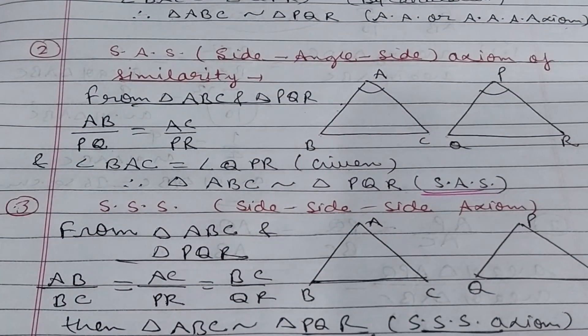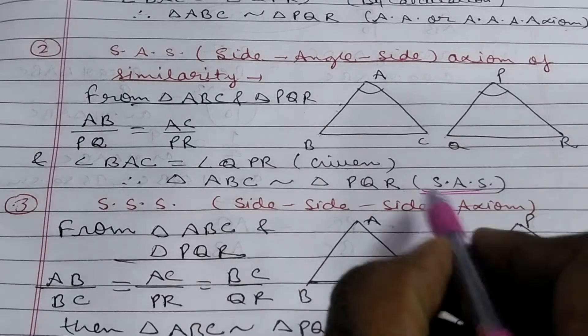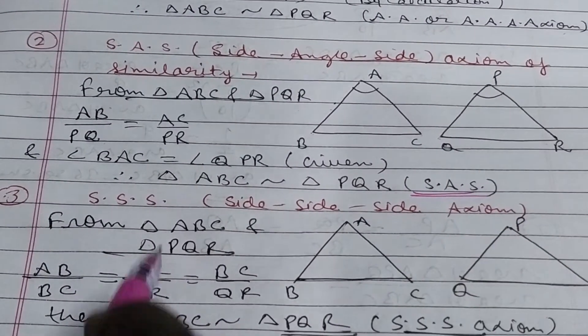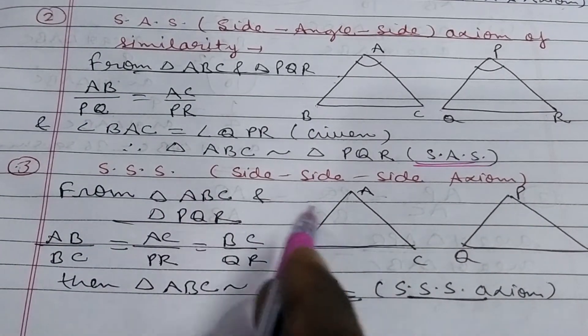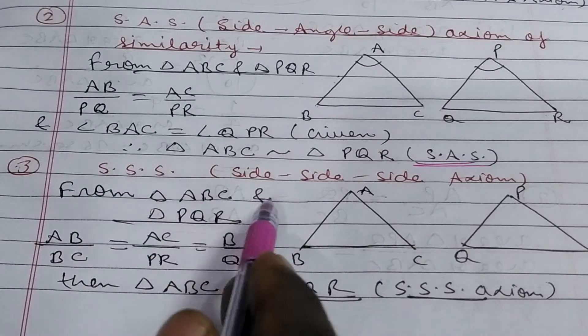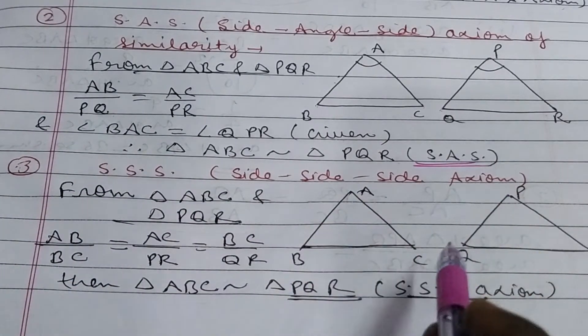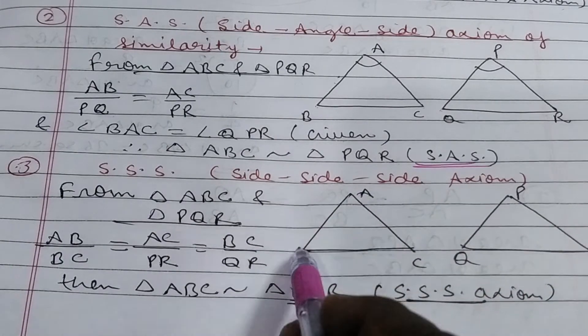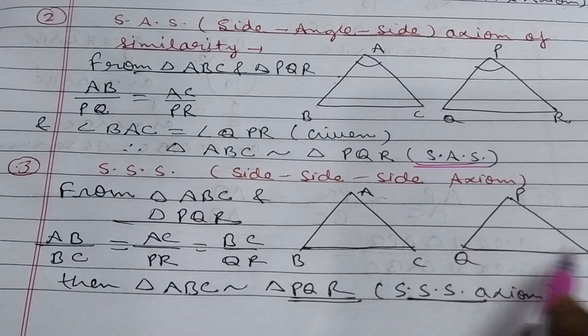The SAS property also is in congruent triangle. But in congruent triangle, side should be equal. In similar triangle, it should be proportional. And last property, SSS. As I have already told you that the sides should be in proportion. SSS means the ratio of all three sides should be same. Suppose the ratio of AB and PQ is equal to AC upon PR equal to BC upon QR.